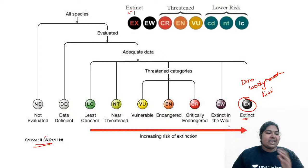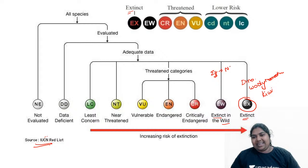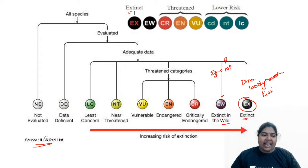The next category is 'Extinct in the Wild.' That means in nature they are extinct, but maybe very few samples are preserved in a natural park or reservoir by artificial methods. Naturally, they are no more — that is what is called as extinct in the wild.